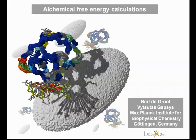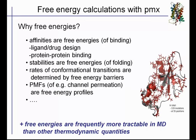Why are we interested in free energy calculations, and in particular alchemical free energy calculations? All sorts of properties of molecules that we are interested in are in fact free energies. For example, affinities are free energies — if we are interested in binding affinities, ligands binding to a receptor, protein-protein binding — the affinity that we express in nanomolar is actually a free energy of binding.